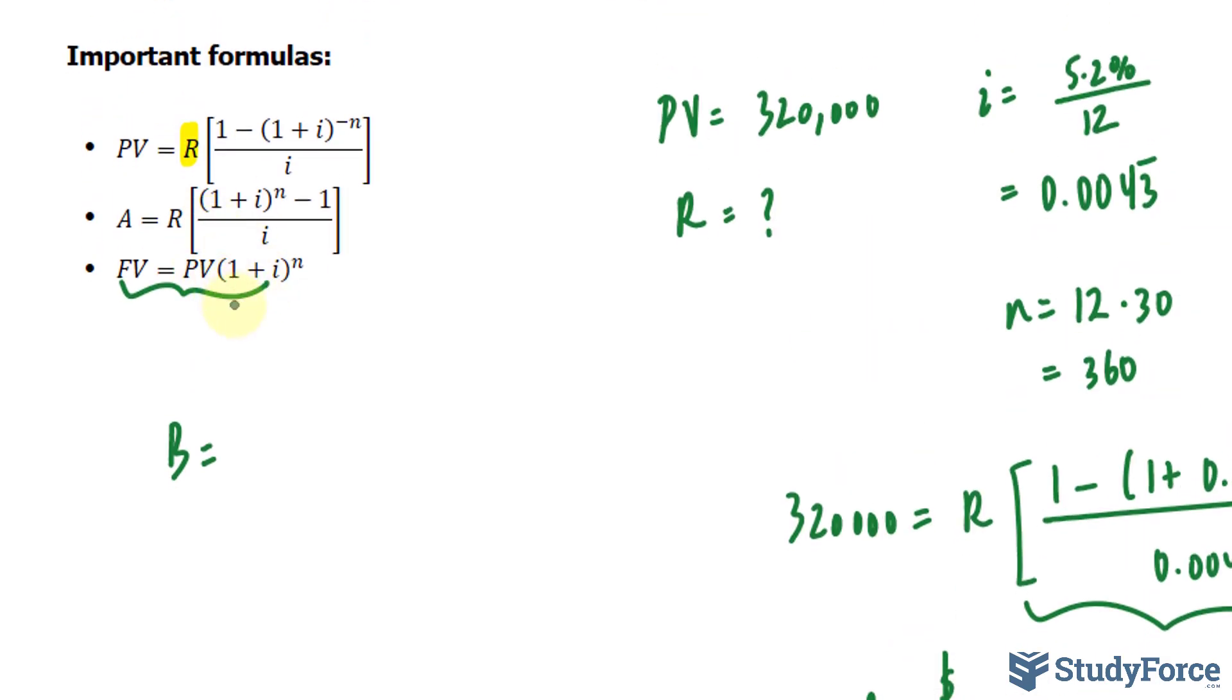Let's go ahead and find out what the future value is of 320,000. So the present value, or PV, is 320,000, multiplied by 1, plus that number that we found, 0.0043 repeating. And we raise that to the power of 60, because there are 60 payments.